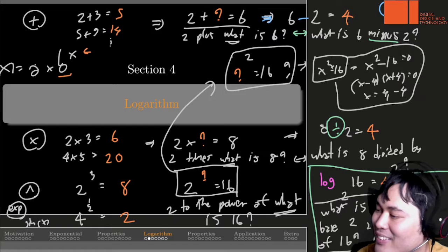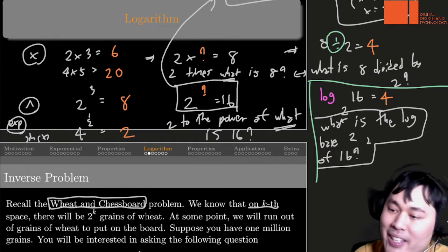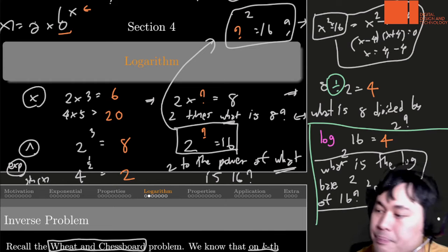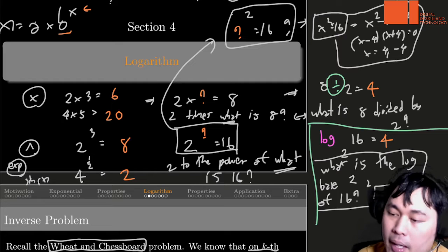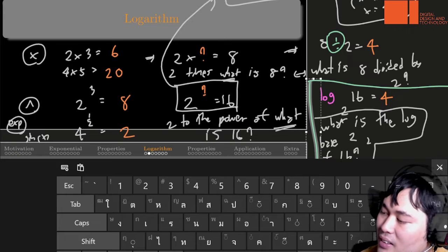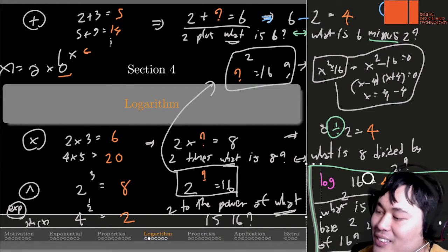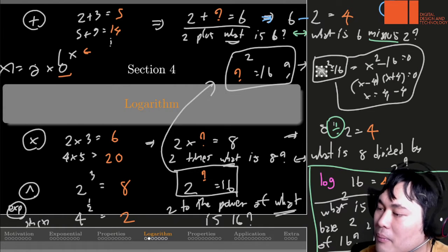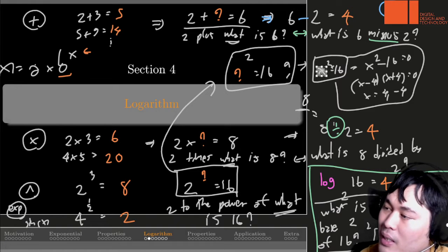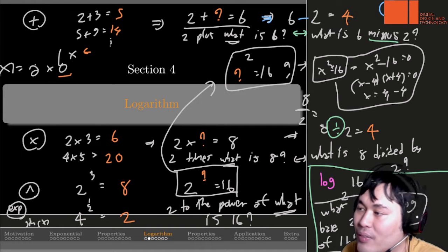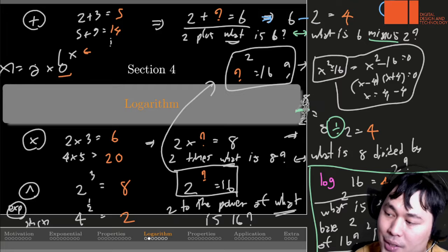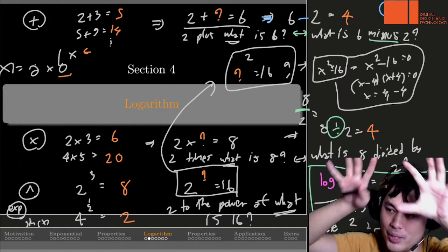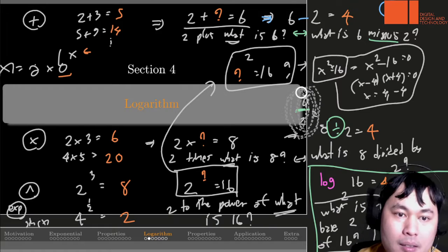The way we read this: we translate to a new question — what is the log base 2 of 16? The answer is 4. And the way we write log in this way is because it mimics the positions of the exponent. The 2 is below and the numbers are above — you can see that 2 is down here and 4 is up there. And it gives you the idea that 2 is the base, it is not ambiguous what we are doing here.